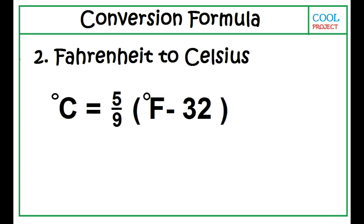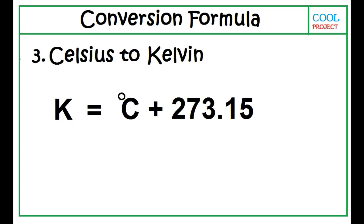To convert Fahrenheit to Celsius, use this formula: degree Celsius is equal to 5 over 9 times the quantity degree Fahrenheit minus 32. To convert Celsius to Kelvin, use this formula: K is equal to degree Celsius plus 273.15.